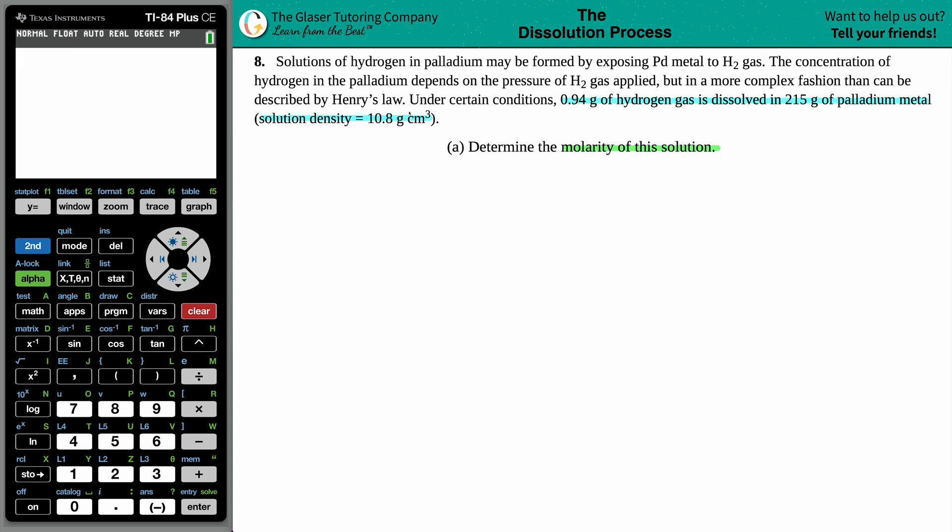Density is always mass divided by volume. To find molarity, we use the formula: capital M equals moles of solute divided by liters of solution. They didn't specifically say what the solute was or the solution, but they gave us context clues. They said we've got solutions of hydrogen in palladium, so our solution has to deal with the hydrogen plus the palladium.